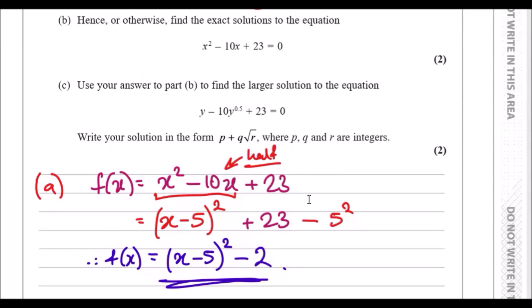By the way, this works all the time. I just half the coefficient of 10 and get 5, wrapped up in a nice bracket x minus 5 all squared. That's why I drew a nice red line over here and then copied out the next bit plus 23.